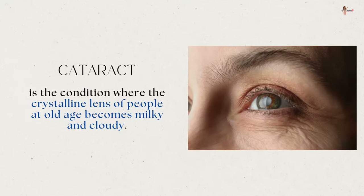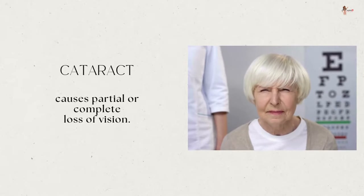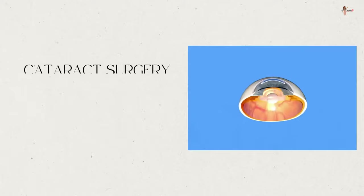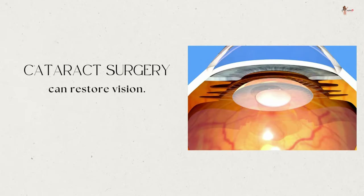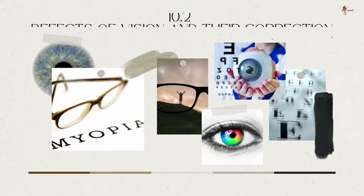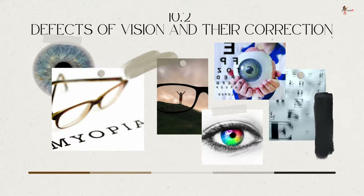Sometimes the crystalline lens of people at old age becomes milky and cloudy. This condition is called cataract, and it causes partial or complete loss of vision. It is possible to restore vision through a cataract surgery.